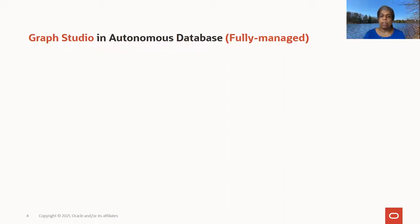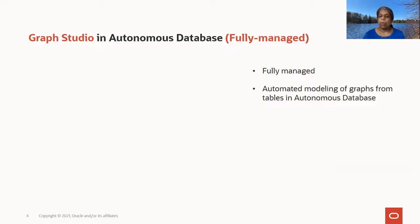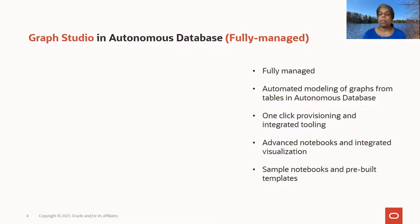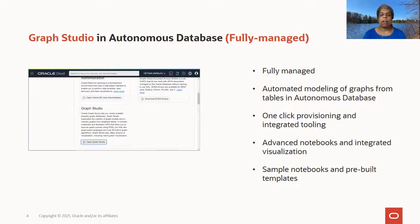When working with Graph Studio in an Autonomous Database, it's a fully managed option. It has several features for automating working with graphs — for example, you can create a graph from tables in a database. You can point and click to select the tables you want included, and the modeler will look at the primary key and foreign key relationships to automatically create a graph. It's easy to provision and includes an advanced notebook UI for running graph queries, analytics, and integrated visualization, as well as sample notebooks to get started.